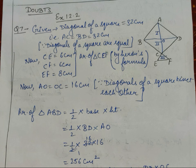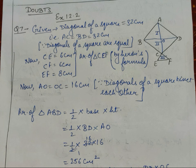Now for the area of the ABCD part: since the diagonals bisect each other, AO = OC = 16 cm. Area of triangle ABD = half × base × height, where base is BD = 32 and height is AO = 16. After solving, area of triangle ABD = 256 cm².